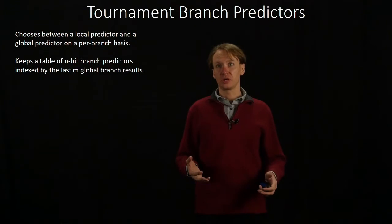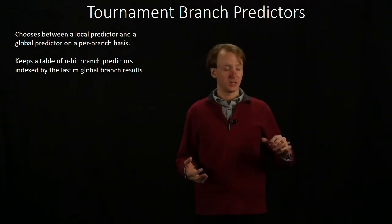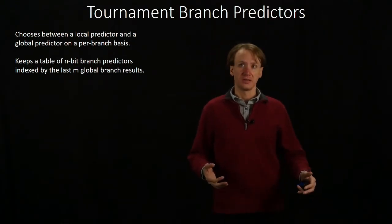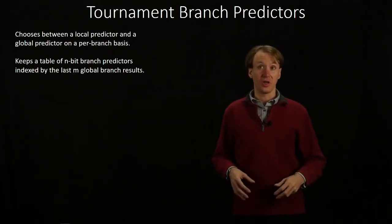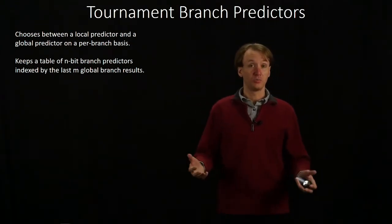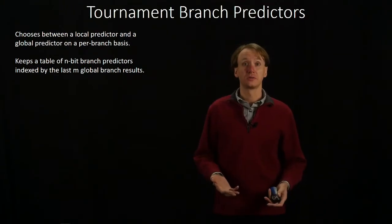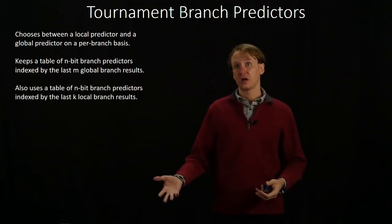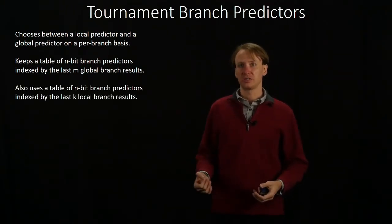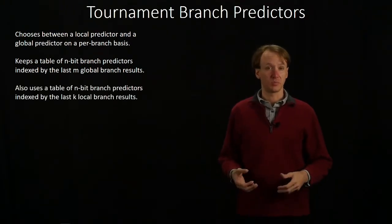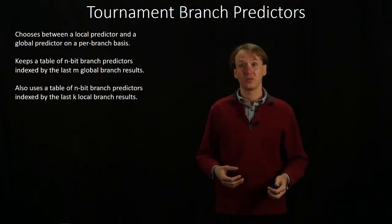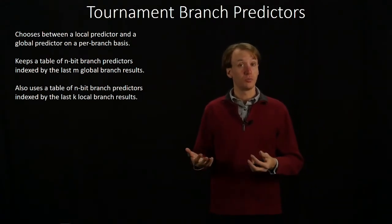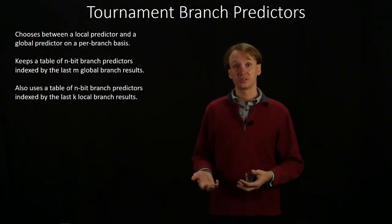On the global side, we can just keep a table of N-bit branch predictors that's indexed by the last M global branch results. On the local side, we can also use a table of N-bit branch predictors indexed by the last K local branch results.